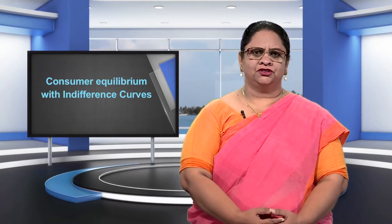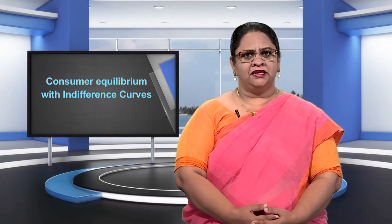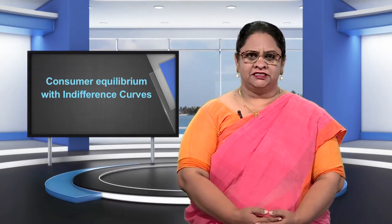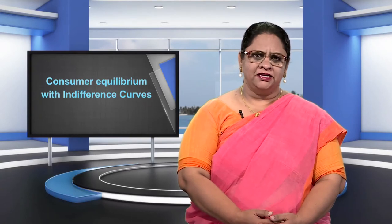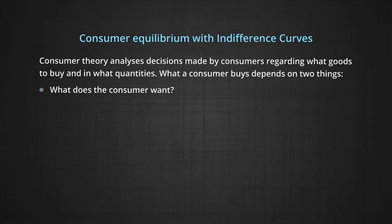In this module, we will take the first steps towards understanding how consumers make their choices by introducing the concepts of budget sets and budget lines. Consumer theory analyzes decisions made by consumers regarding what goods to buy and in what quantities. What a consumer buys depends on two things: what does the consumer want, and what can the consumer afford to buy?